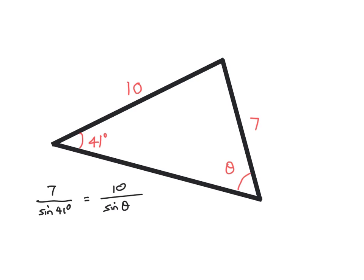What we can do here is actually turn both of these fractions upside down, so sine 41 over 7 equals sine theta over 10.